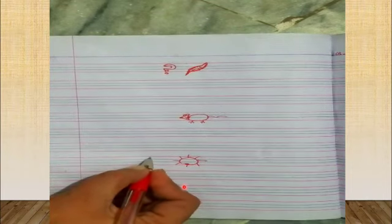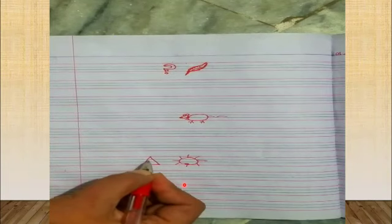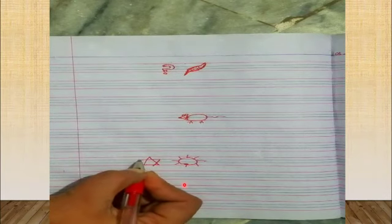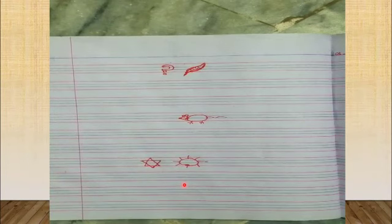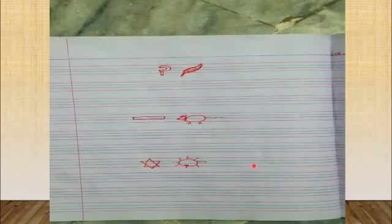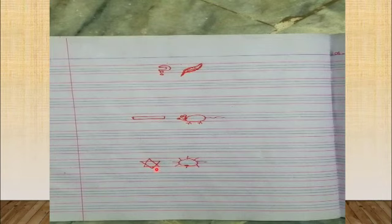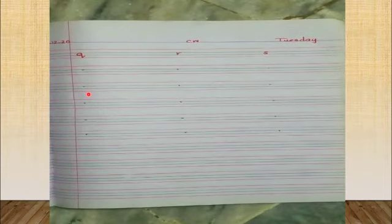You can also draw a star. Make a triangle within the four lines, then another triangle. It's a star. Quill, question, ruler, rat, star, sun. Then go to the writing page.